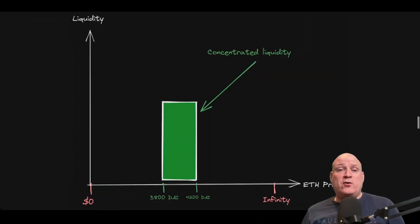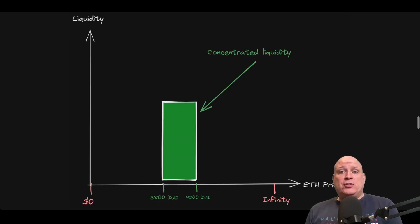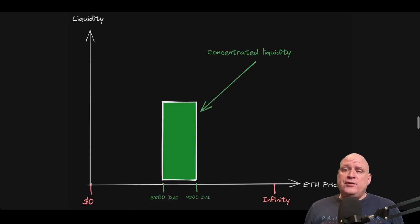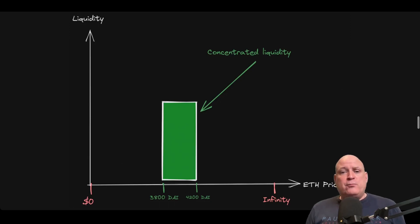With Uniswap version 3, concentrated liquidity was introduced, meaning users could pick a range in which to concentrate their liquidity. An example would be putting one Ethereum and 4,000 US dollar coins into a pool as liquidity. The user can pick a concentrated range between, say, $3,800 to $4,200. All swaps within this range earn the user fees. Swaps outside that range do not. This improves the efficiency of the capital being used as liquidity.